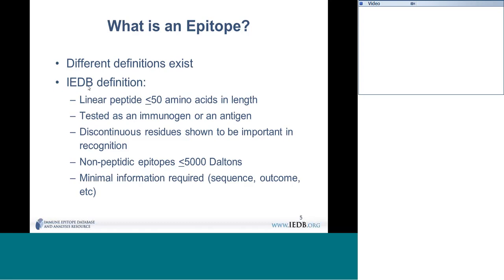We limited our epitope definition to any linear peptide that is less than 50 amino acids. Very often a different author, or the same authors later, will define a more minimal epitope. If something was 50 amino acids, we capture it, and then if a future publication identifies a smaller part of that region, we provide tools with links so you can see everything else that's in the area.